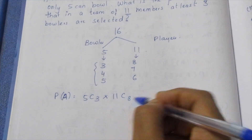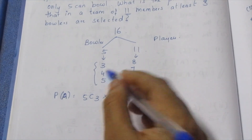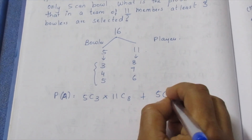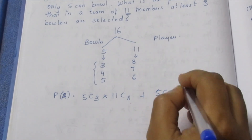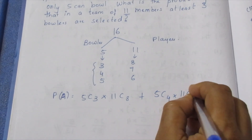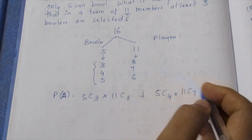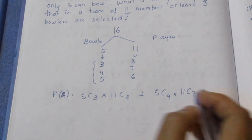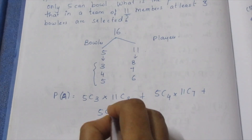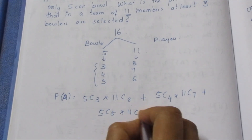So we have 11C8 for the remaining players. Case 2: 5C4 into 11C7 — selecting 4 bowlers and 7 others. Case 3: 5C5 into 11C6 — selecting all 5 bowlers and 6 others.